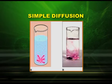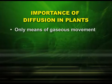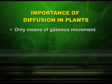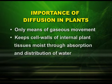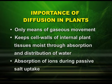Now let us see what is the importance of diffusion in plants. Number one, it is the only means of gaseous movement within the plant body. Second, it keeps the cell walls of internal plant tissues moist through absorption and distribution of water. And third, absorption of ions during passive salt uptake.